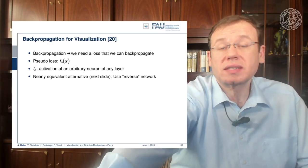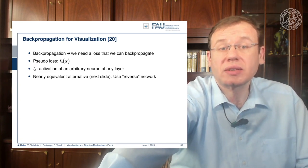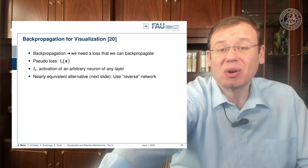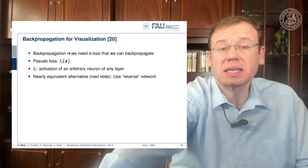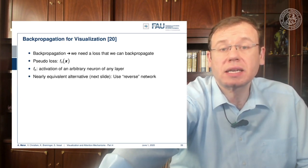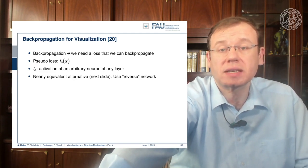We will learn several different approaches to do this, and the first one is based on reference number 20. For back propagation, we actually need a loss to back propagate, and we simply take a pseudo-loss that is the activation of an arbitrary neuron or layer. Typically, you want to take neurons in the output layer because they can be associated to a class.